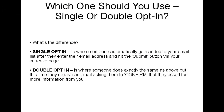Let's start by talking about the differences between the two. A single opt-in is where someone automatically gets added to your email list as soon as they enter their email address into the opt-in box — whether to claim a free gift, join your newsletter, or get more information from you. They get added to your list straight away with no extra hoops to jump through.